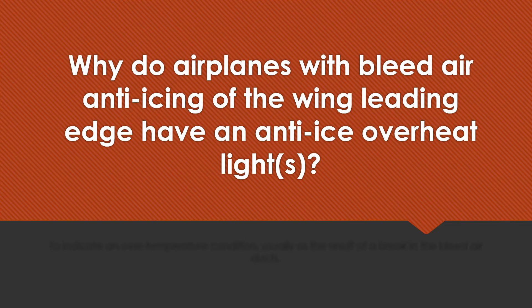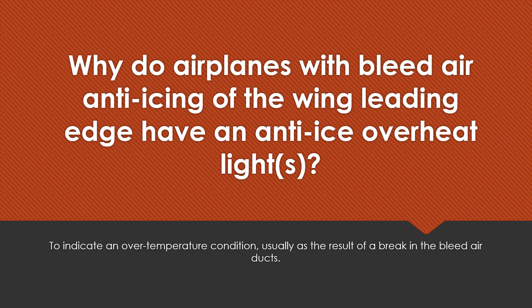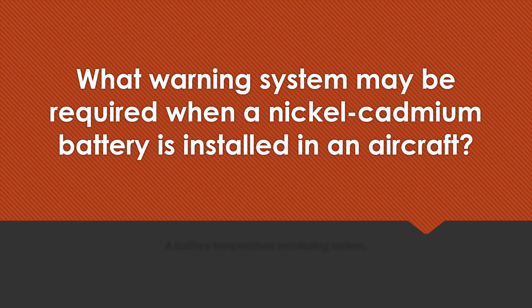Why do airplanes with bleed air anti-icing of the wing leading edge have an anti-ice overheat light or lights? To indicate an over-temperature condition, usually as the result of a break in the bleed air duct. What warning system may be required when a nickel-cadmium battery is installed in an aircraft? A battery temperature monitoring system.